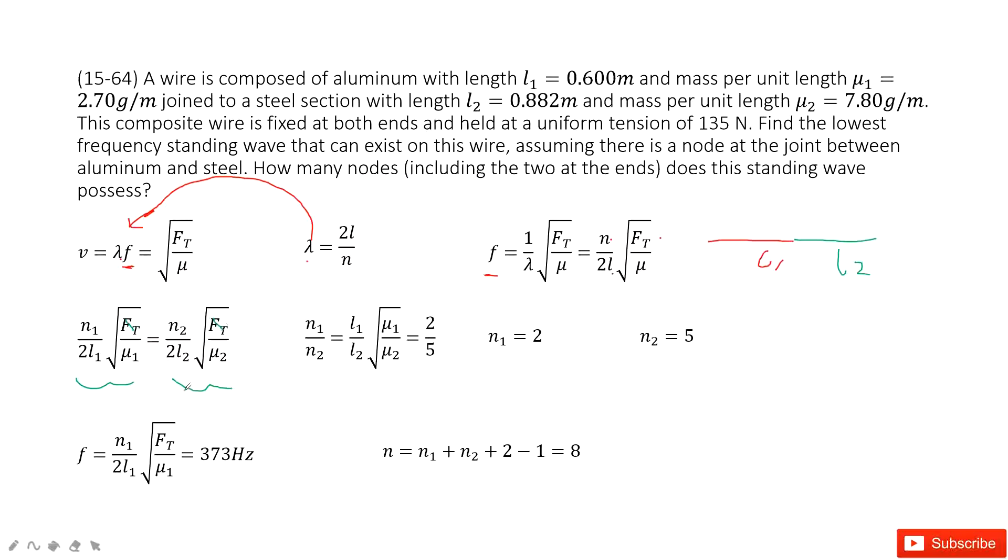And then this part we can see. Ft, Ft equals, we can cancel them. 2, 2 equals, we can cancel them. So we can get the ratio for the n1 to n2 equal to this function. And then in this function, you can see L1, L2, mu1, mu2 are given. So we find this ratio is just 2 over 5.